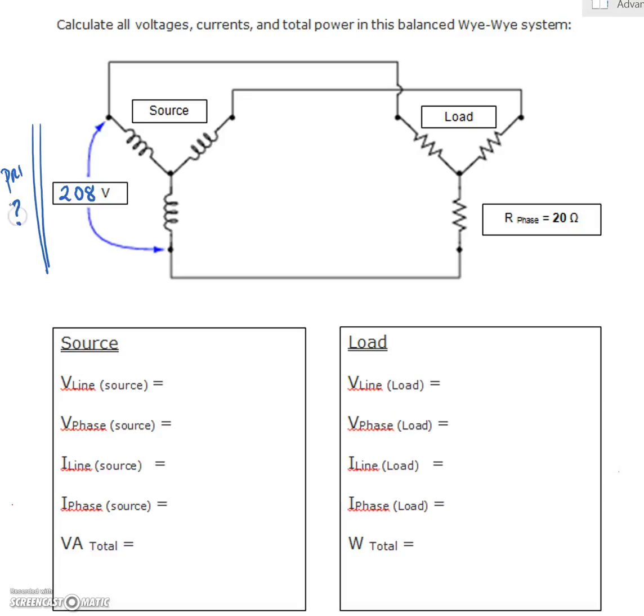No idea what the primary is that's feeding this. But our secondary looks like it has a voltage of 208 that's given. And what do we know about the resistive load? Well, we know that each of these guys is 20 ohms. We're still doing balanced circuits here.